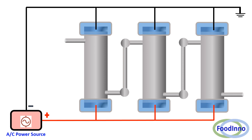Ohmic heating process could be performed in a multi-stage configuration using multiple ohmic tubes. Product could be initially heated in the first ohmic heating tube and then passed to the second ohmic heating tube. In this example, three stages of heating are achieved: in the first tube temperature is raised from 20°C to 60°C, then in the second tube from 60°C to 80°C, and finally from 80°C to 90°C.